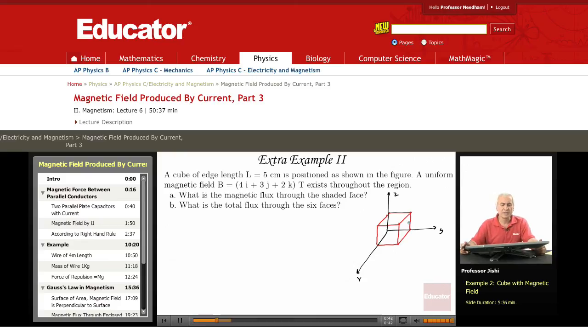Its edge length is five centimeters. We have a uniform magnetic field B which is 4i hat plus 3j hat plus 2k hat in Tesla. It exists throughout the region. What is the magnetic flux through the shaded face? The shaded face is this one.